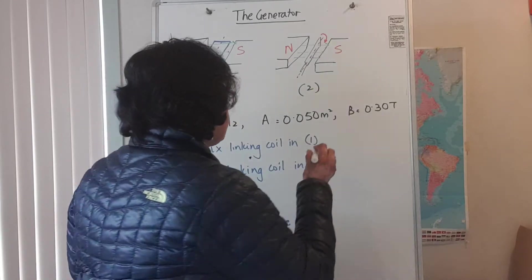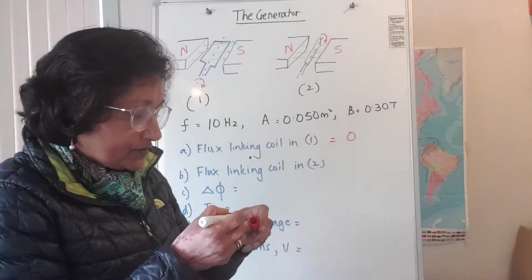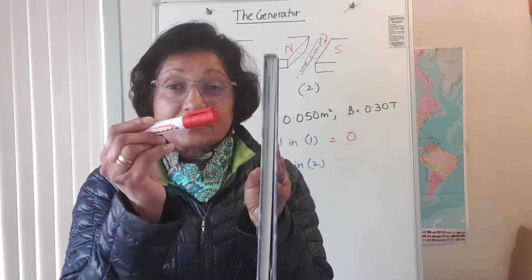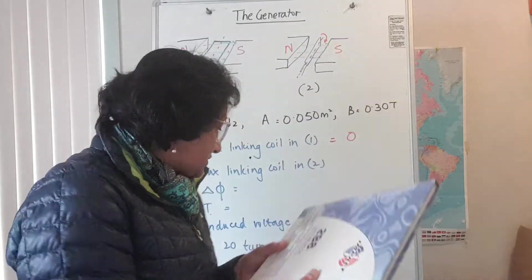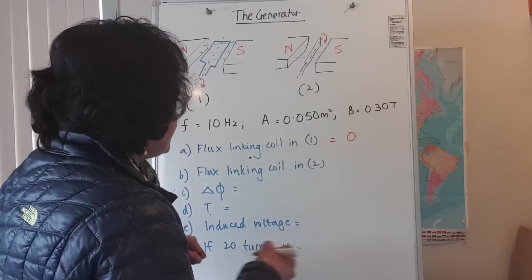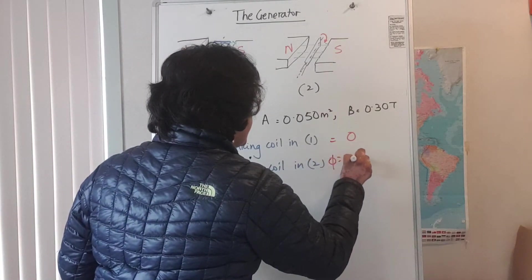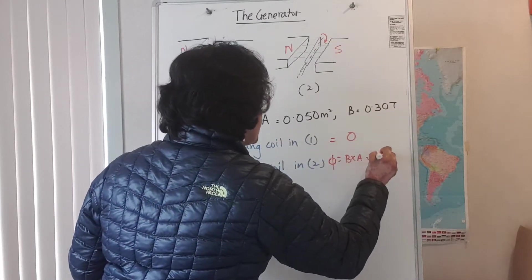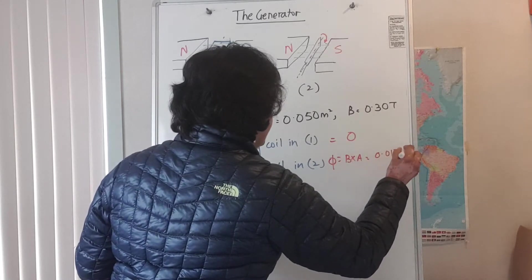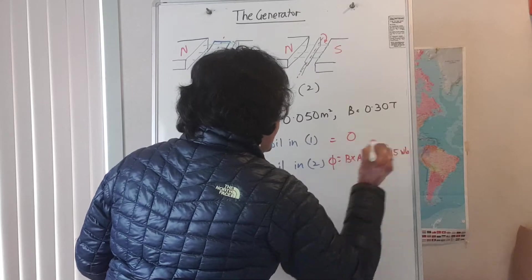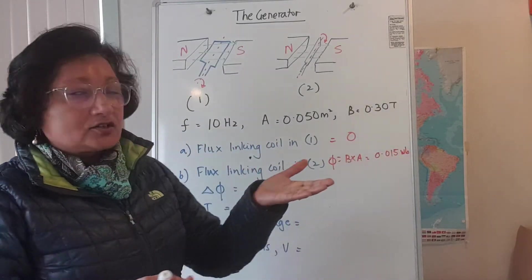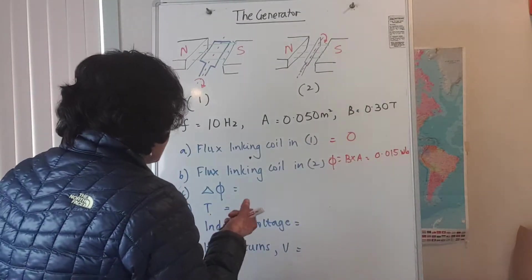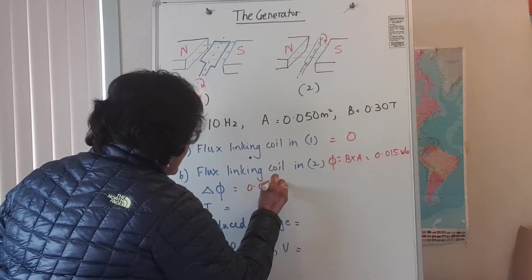The answer is actually 0 — it's zero because they're parallel. When it's in position 2, the lines of flux are cutting it perpendicular. So what is the flux linking the coil? Flux is B times A: your B is 0.30, your area is 0.050, multiply the two and you get 0.015 Weber. So the change in flux going from position 1 to position 2 is 0.015 Weber.